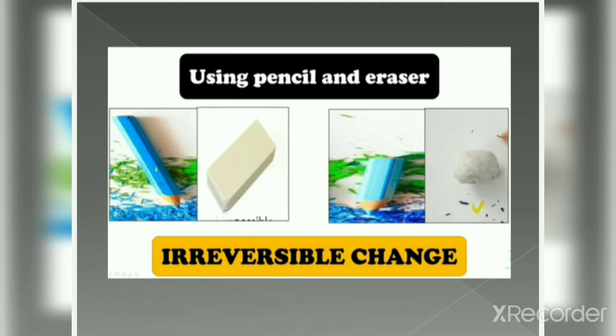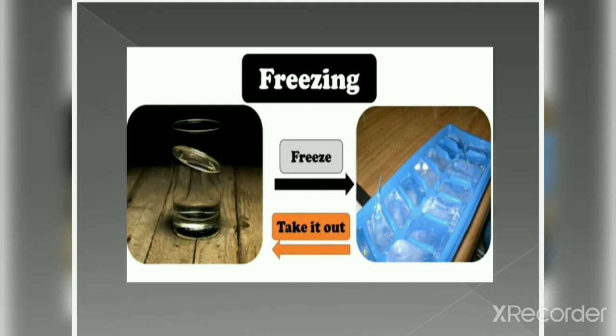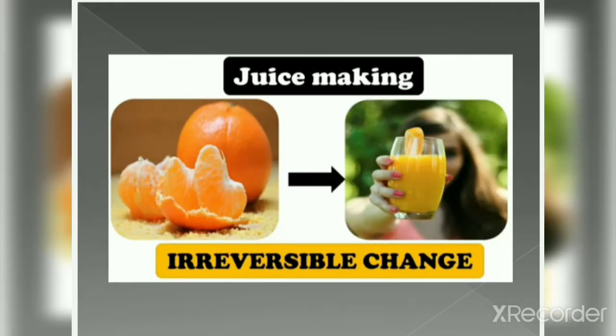What kind of change is freezing? The water has frozen into ice cubes. Can we get back the original water? Yes — you just have to take it out of the fridge and keep it at normal temperature, and you will get back the water again. So it is a reversible change. Now, we make juice out of oranges. Once the process is done, can I get back the oranges? No, I cannot get my oranges back — so it is an irreversible change.